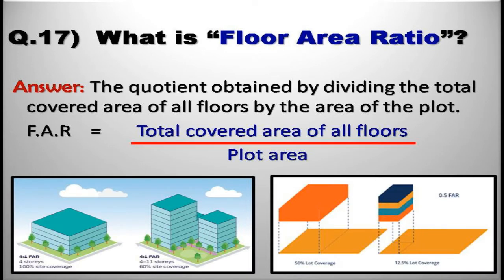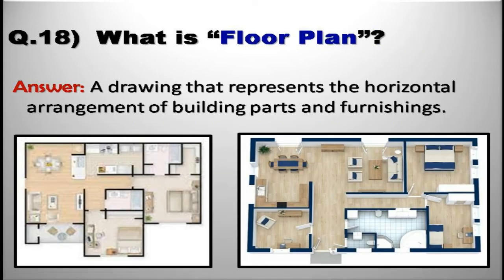What is floor area ratio (FAR)? The quotient obtained by dividing the total covered area of all floors by the area of the plot. FAR equals total covered area of all floors divided by plot area. What is floor plan? A drawing that represents the horizontal arrangement of building parts and furnishings.